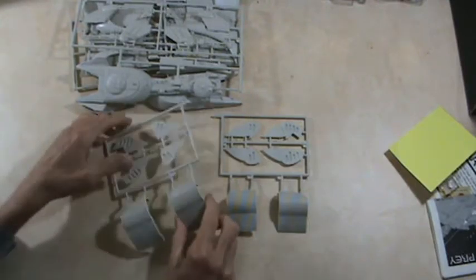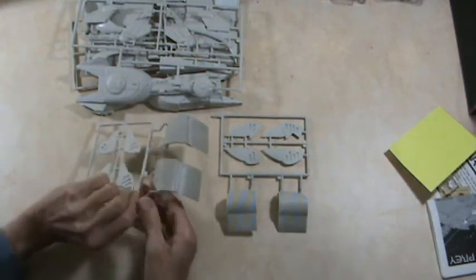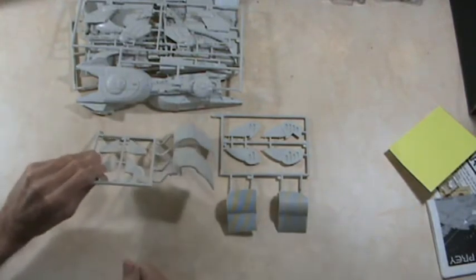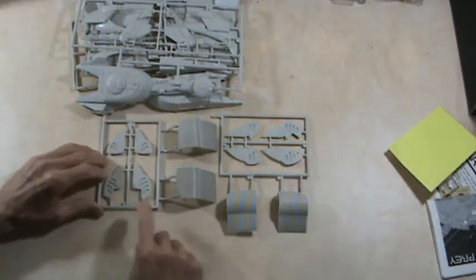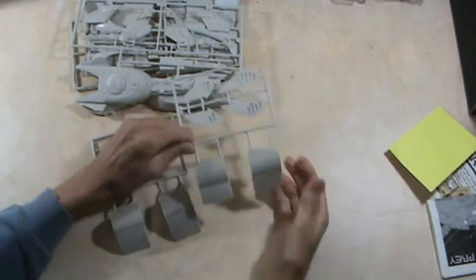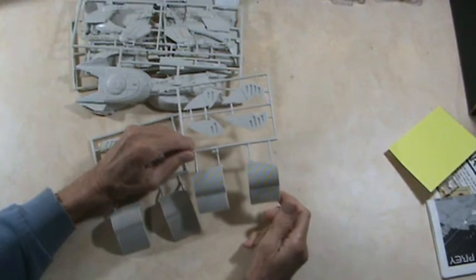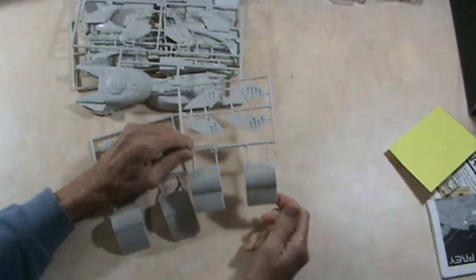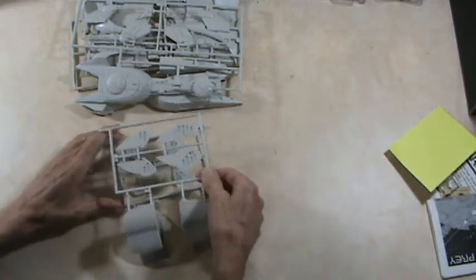Now, there's two sprues of the same parts in different configurations, basically. This is with the wings down for combat position. I don't know. Let's see if you can see that. And you can see these are different from these. And these are with the wings folded straight out. I don't think this has the capability for having the wings up in the landing position. So there's those parts.